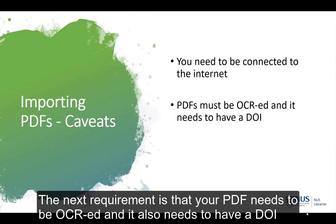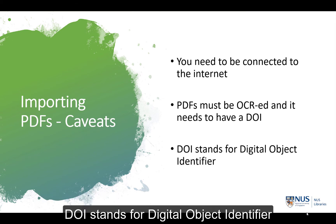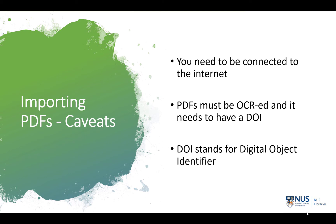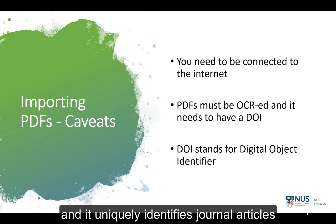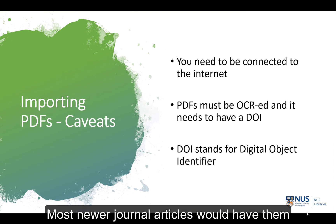The next requirement is that your PDF needs to be OCRed and it also needs to have a DOI. DOI stands for Digital Object Identifier and it uniquely identifies journal articles. Most newer journal articles would have them.